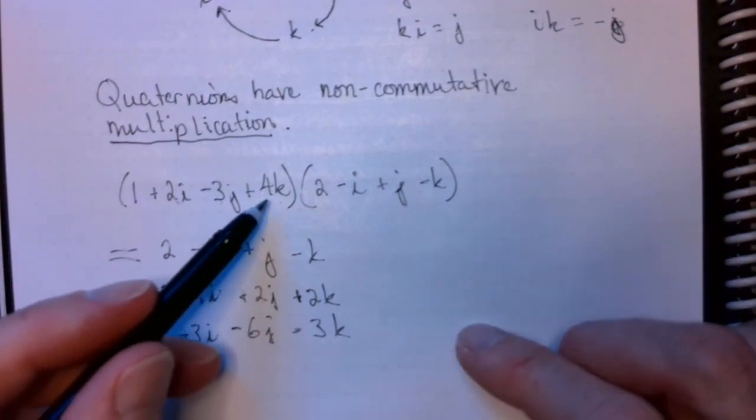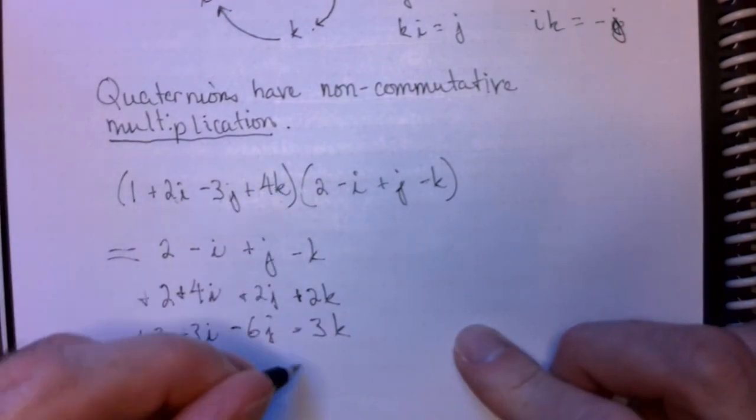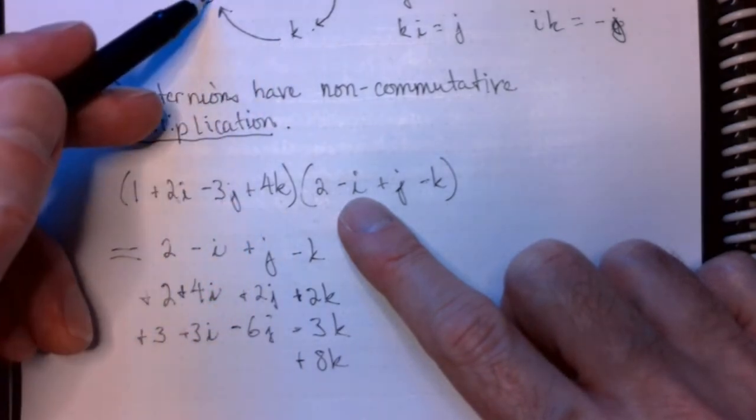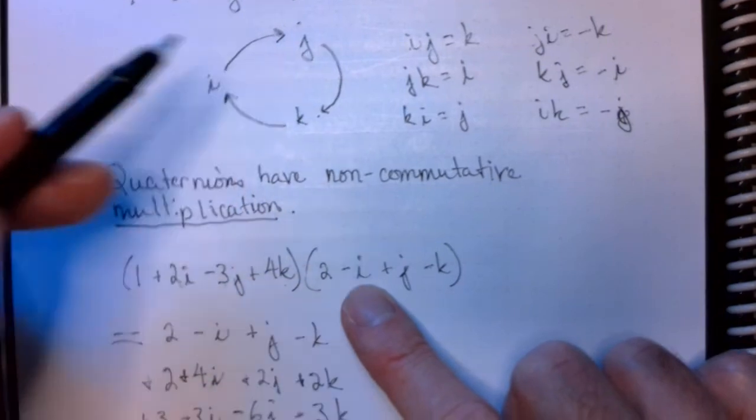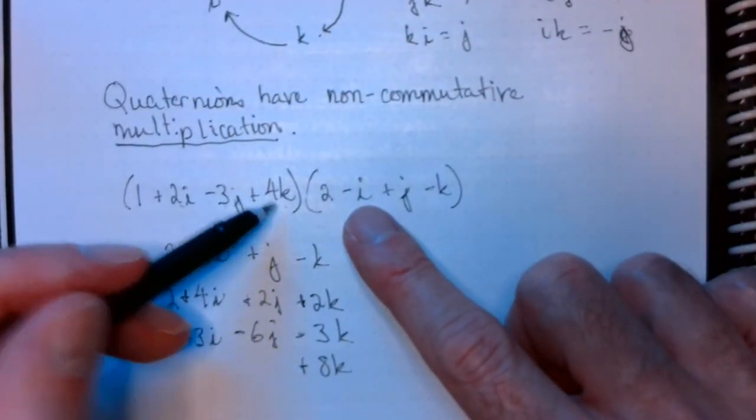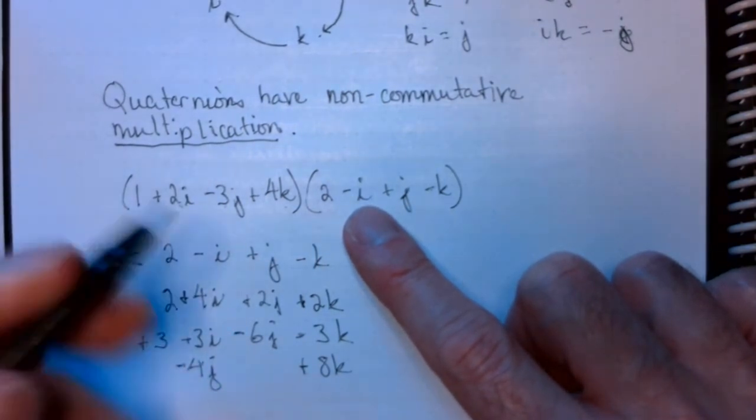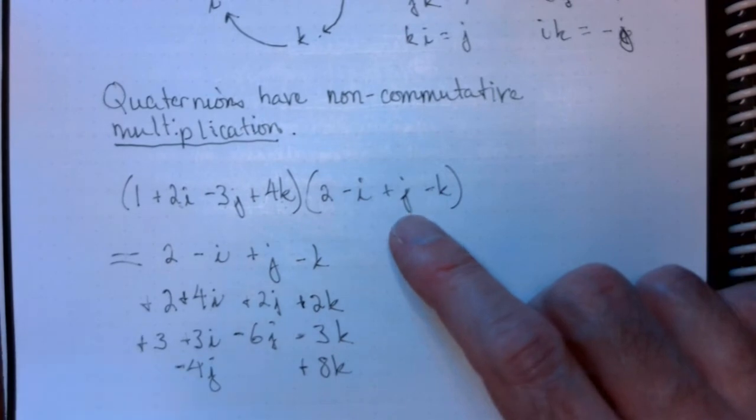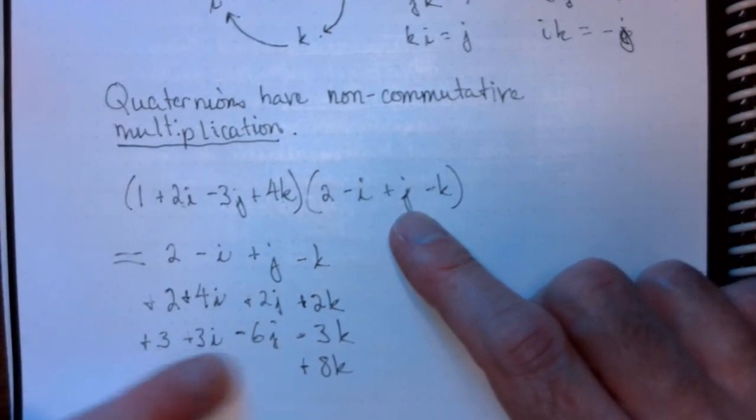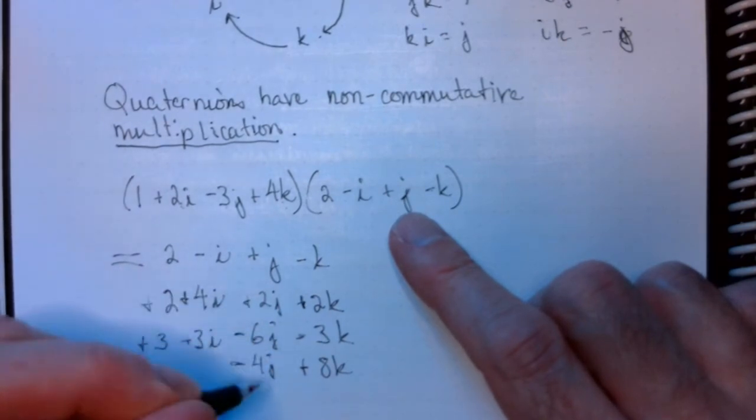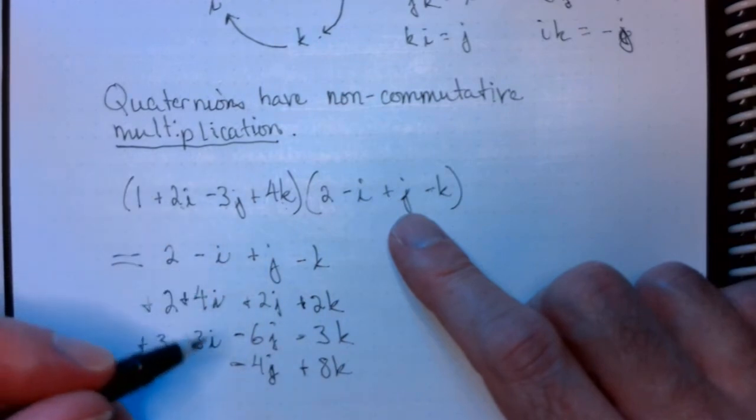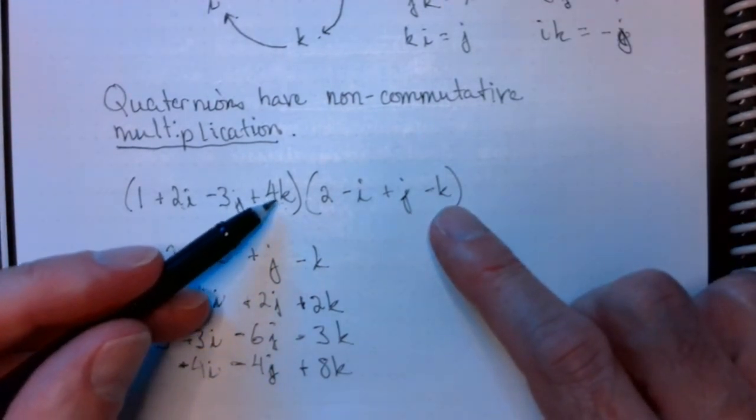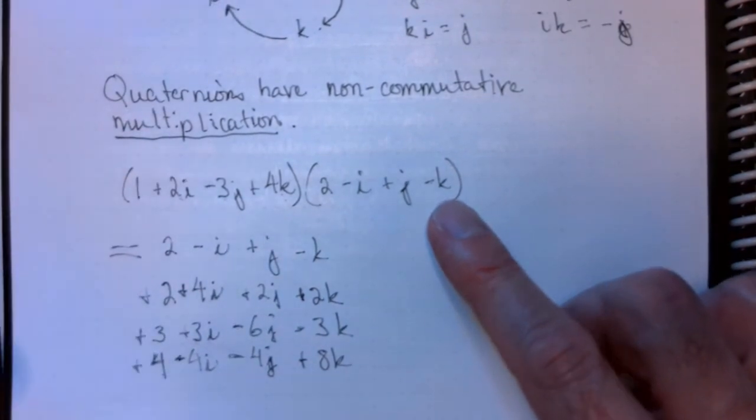And the last thing to do is distribute through the 4k. So, 4k times two, that's plus eight k. K times negative i. We know k times i is j from the diagram. So, you have four times negative one, negative four j. K times j is negative i, so that's negative four i. And over here, I've got negative four k squared. And that turns into a plus four.